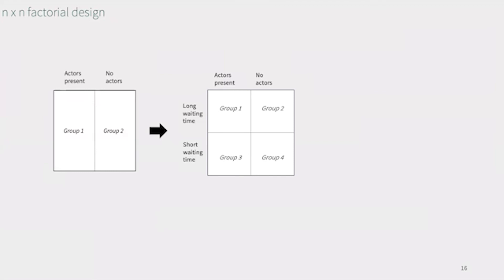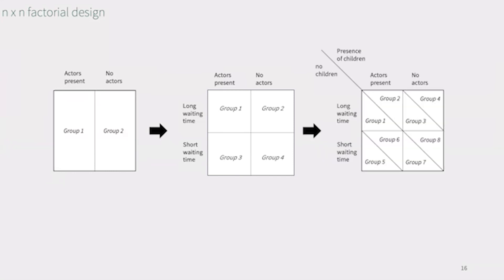In the same way, we may add more factors that will, with their number of levels, add as multipliers to the number of conditions. Adding another variable with two levels, presence of children and no children, will leave us with eight conditions and so forth. Of course, adding factors will increase the requirements with respect to the sample size.